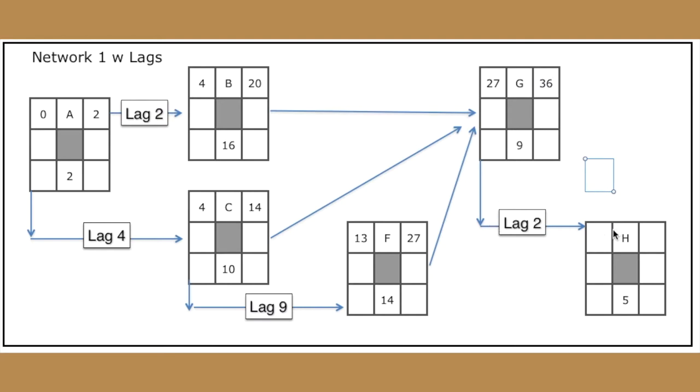And then when we do our calculation for H, we're going to see that H is not dependent on the finish of G, but on the start with a lag of two. So this can start two days after G starts. So the earliest it could possibly start is in time increment 29. Do our normal calculation here, we come up with 34. We're going to put that 34 down here, subtract 5 from it, and get 29 again. So we have both a slack of zero if we do the calculations on both the start as well as on the finish.